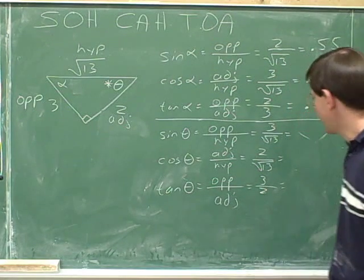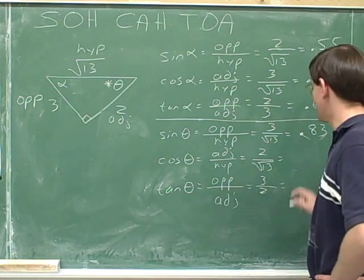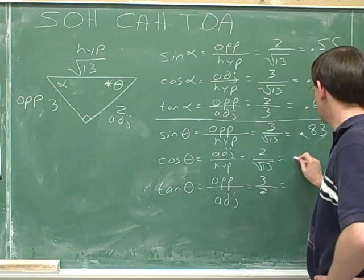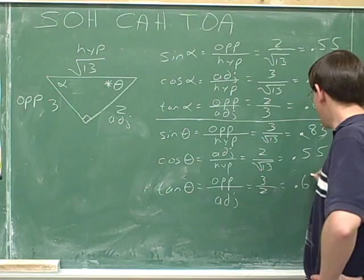We could leave the answers like that, or we could do our divisions. 3 divided by root 13 is 0.83. 2 divided by root 13 is 0.55. And 3 divided by 2 is 0.67.